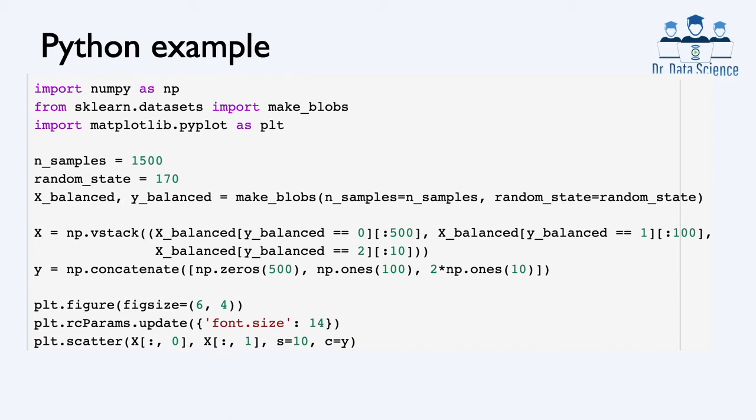x is a two-dimensional array: 610 rows and 2 columns, because we have two features. That's a property of make_blobs — if you don't specify the number of features, it's automatically set to 2. Now we use a scatter plot to visualize this dataset, setting the argument c equals y so we can see the ground truth labels.